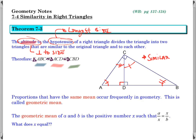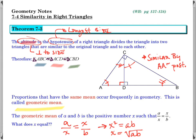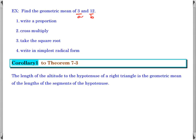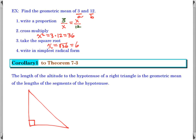Let's get back to the geometric mean. We set this proportion up, and then you cross multiply. If I cross multiply, I get X squared equals AB, and then X is the square root of A times B. As a condition, A and B are both positive, which guarantees a positive square root and a real number — if one were negative, we'd have imaginary answers, which doesn't make sense in geometry. For an example, we find the geometric mean of 3 and 12: write a proportion, substitute, cross multiply, take the square root, and simplify to simplest radical form.